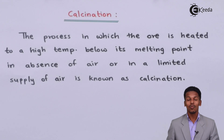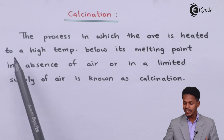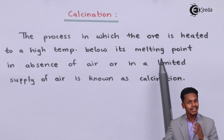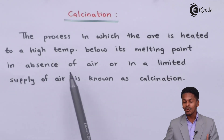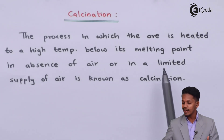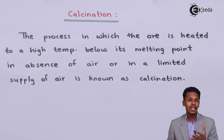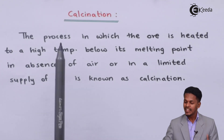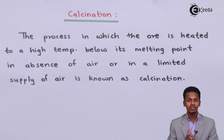Let us understand what is actually calcination. Calcination means the process in which the ore is heated to a high temperature below its melting point. This is very similar to roasting, but the difference is it occurs in absence of air or in limited supply of air. This process of heating an ore below its melting point in absence or limited supply of oxygen is known as calcination.